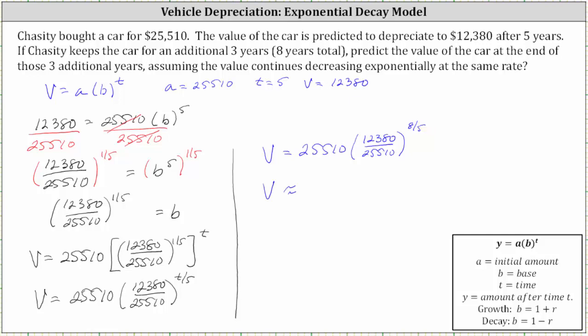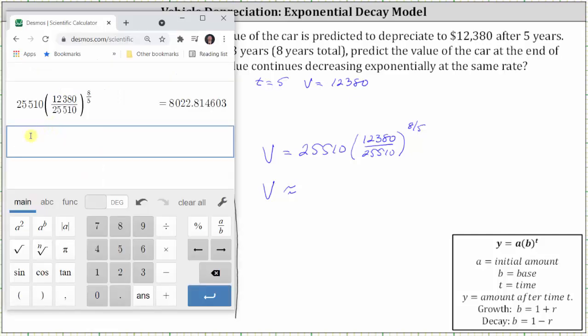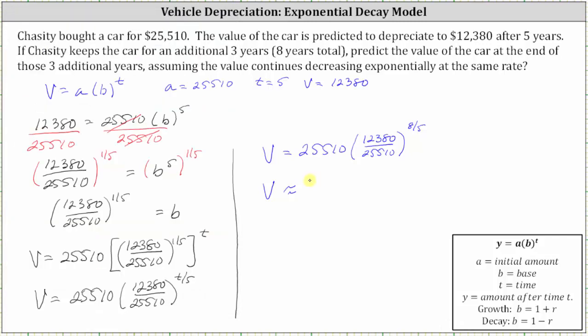Now we go to the calculator. It doesn't say where to round, and therefore I'll round to the nearest cent. And we can see the value to the nearest cent is $8,022.81. The predicted car value after eight years is $8,022.81.